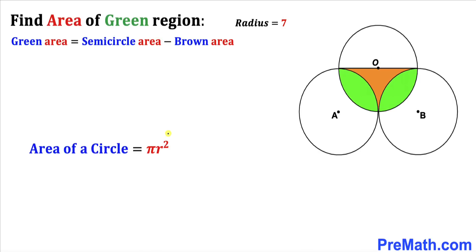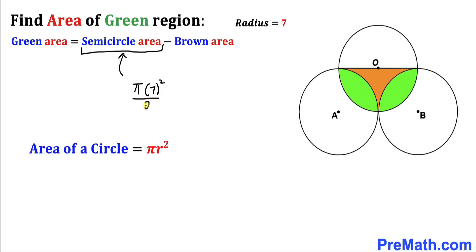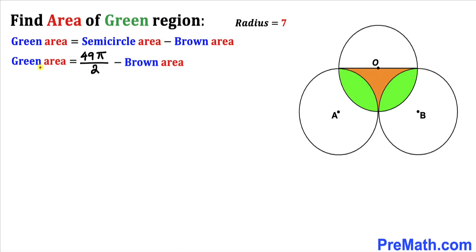We can easily calculate the area of the semi-circle since we know the radius is seven. Recalling the area of a circle formula: Area = πr². In our case r = 7, so the area of this semi-circle is π(7)² divided by 2, which simplifies to 49π divided by 2. So therefore the green shaded area is 49π/2 minus the brown area.